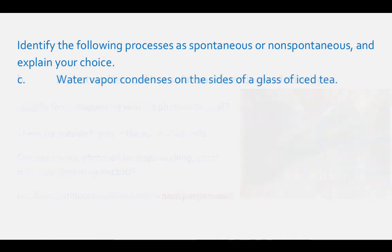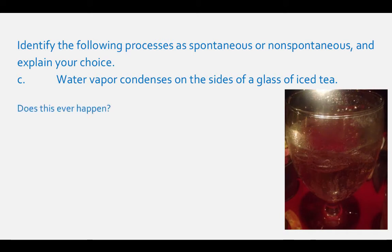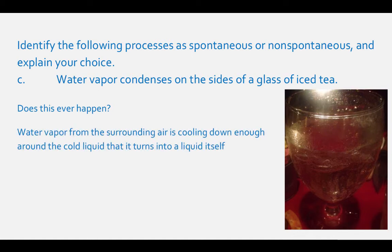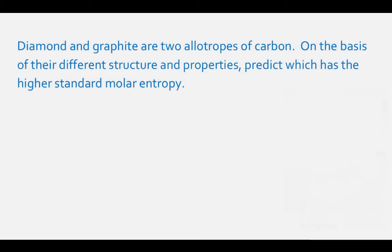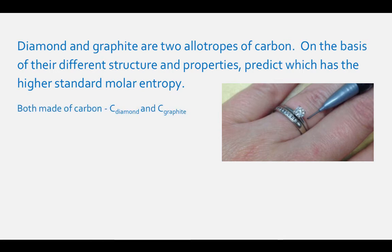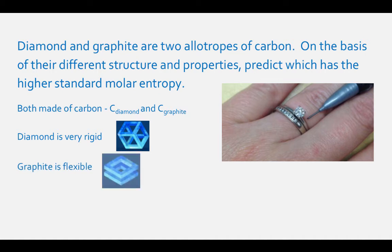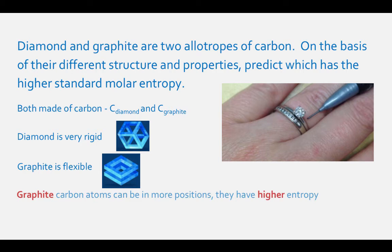For letter C, when water vapor is condensing on the sides of a glass of iced tea, you need to ask yourself if this does happen at all. Water vapor from the surrounding air cools down enough around the cold liquid that it turns to a liquid itself — so yes, this is a spontaneous process. Next question: diamond and graphite are two allotropes of carbon. Diamond has a very rigid structure, which makes it one of the hardest substances on Earth, while graphite has a more flexible structure with layers of carbon that can pass by each other. Since graphite is more flexible, it has a higher entropy, because the carbon atoms can be in a lot of different positions.